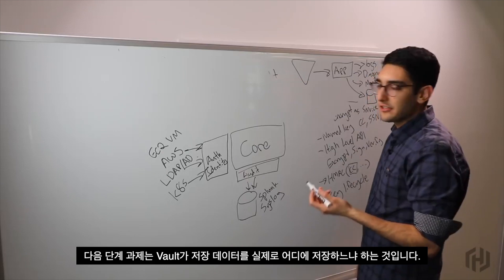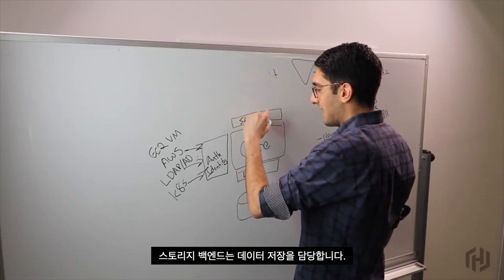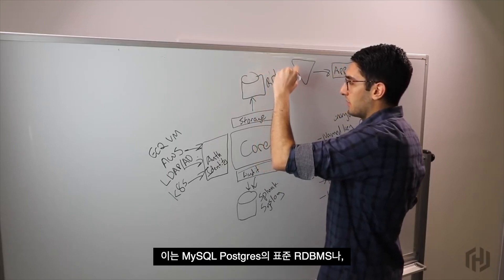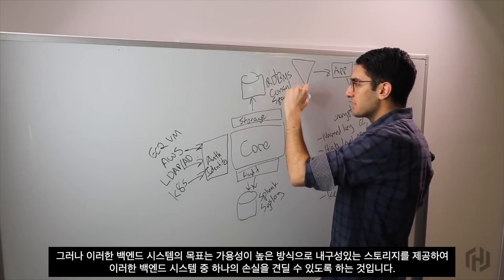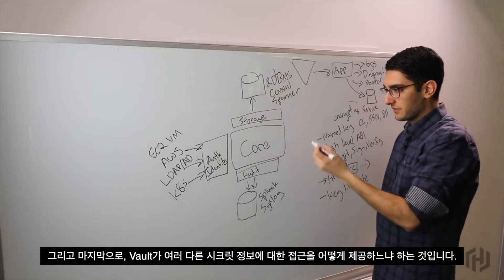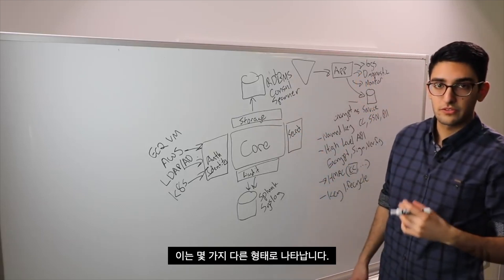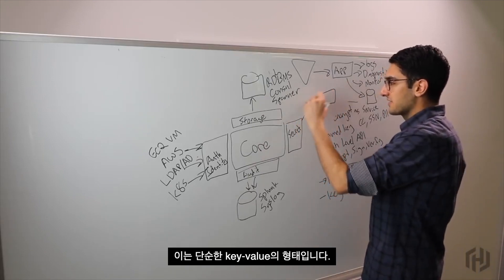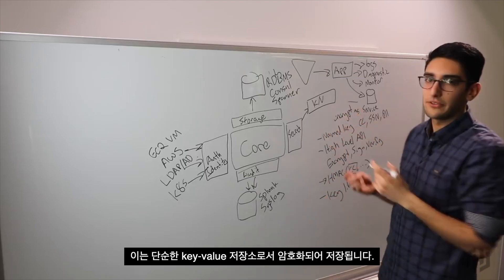The next challenge is where does Vault actually store its own data at rest? If we're going to read and write secrets to Vault, it needs to be able to store these things somewhere. These are what we call storage backends, responsible for storing data at rest. This can be a standard RDBMS like MySQL or Postgres, a system like Consul, or a cloud-managed database like Google Spanner. The goal of these backend systems is to provide durable storage in a way that's highly available. The last bit is how Vault provides access to different secrets — these are the secret backends themselves. The simplest form is just a key-value store: I store a static username and password, and these things are static — an encrypted key-value store at rest.